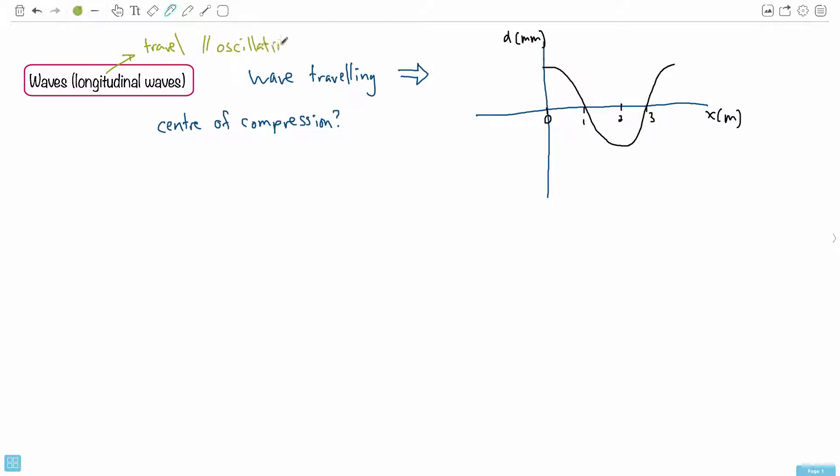Now the weird thing is the diagram they showed you doesn't quite look like that, so you have to think a little bit more carefully about it. Because we have the travel is parallel to the oscillation, what it really means then, and by the way, they're asking where is there a center of compression?